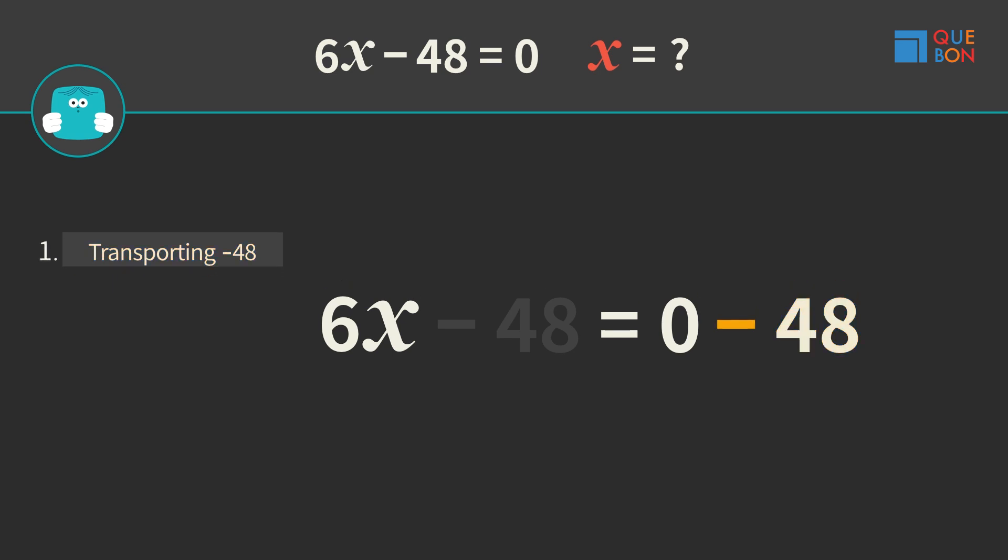Here, something amazing happens. Sweaty uses the rule of changing the sign when moving numbers over the equal sign. Sweaty adds 0 to 48, which gives 48.